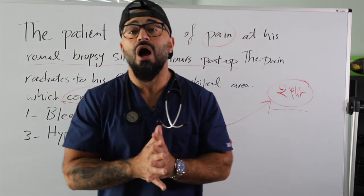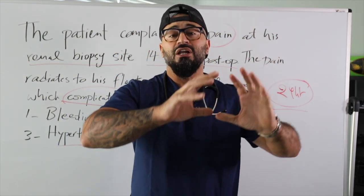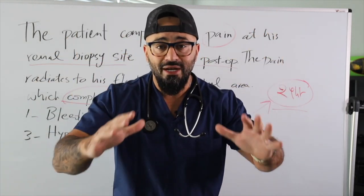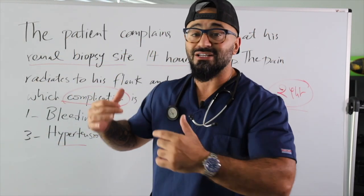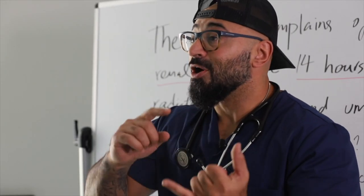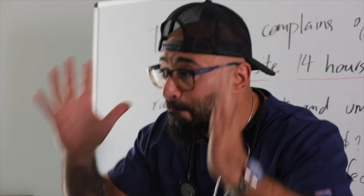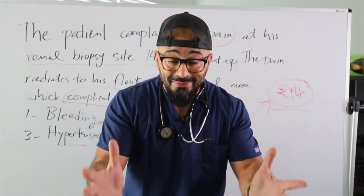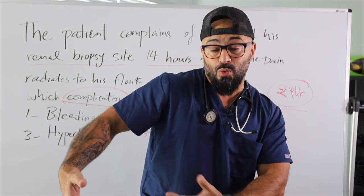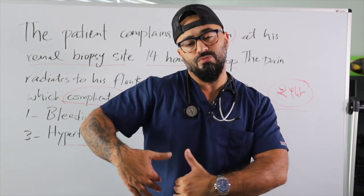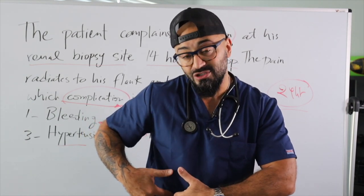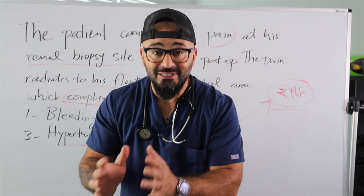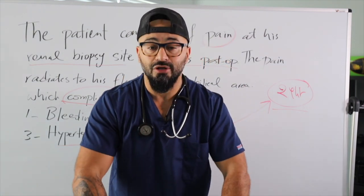The right answer is bleeding. Bleeding is the number one complication when it comes to renal biopsy. Now let's talk about the main complications — there are four of them. Complication number one is bleeding. How do you see bleeding? There might be hematoma, so you have to assess for that. But the number one sign for bleeding after renal biopsy is hematuria, which is blood in your urine.